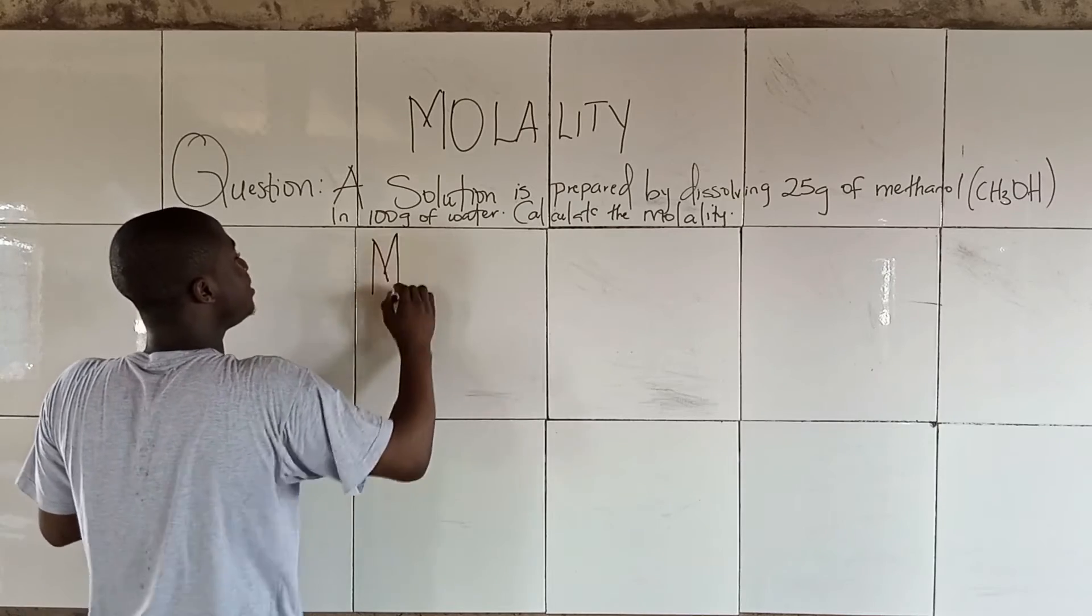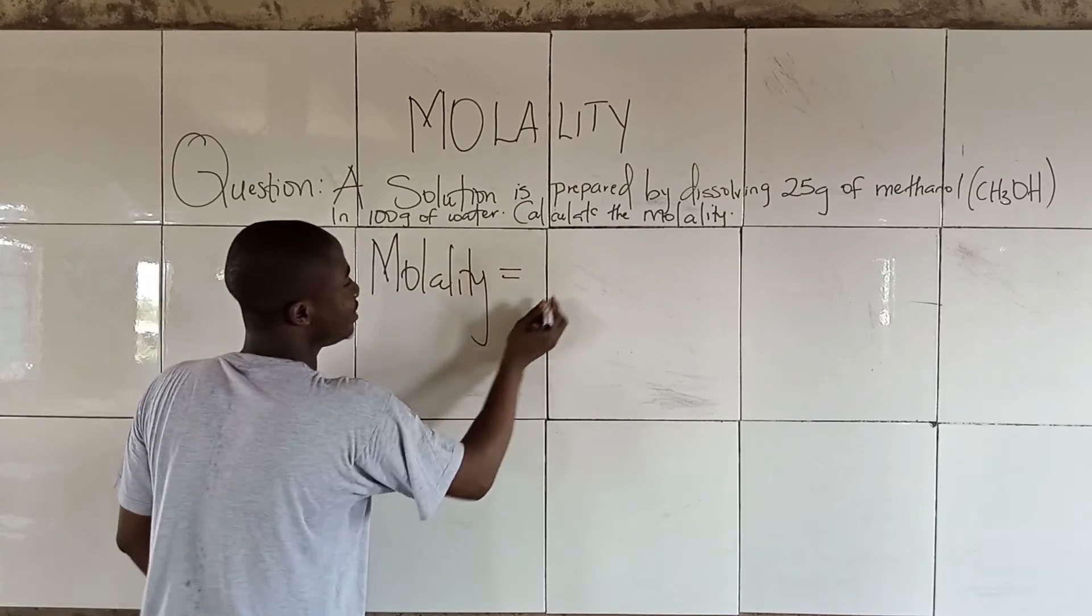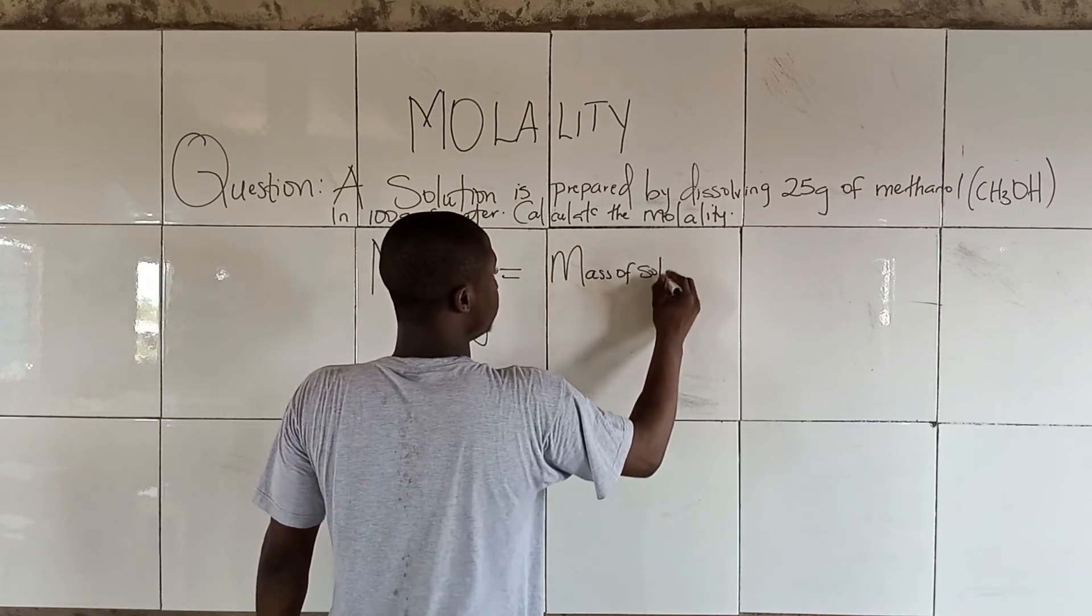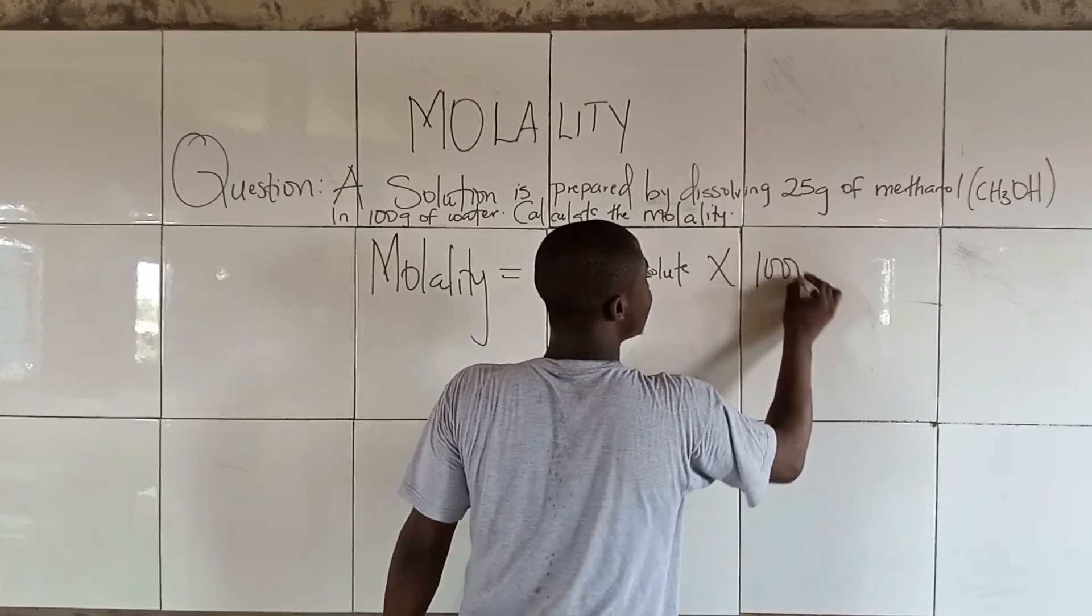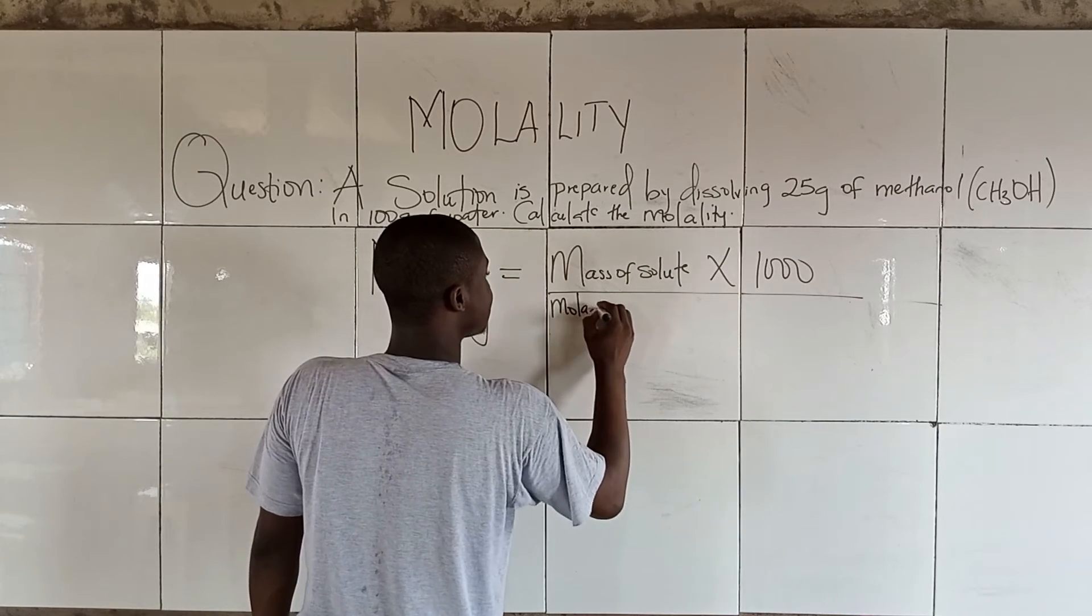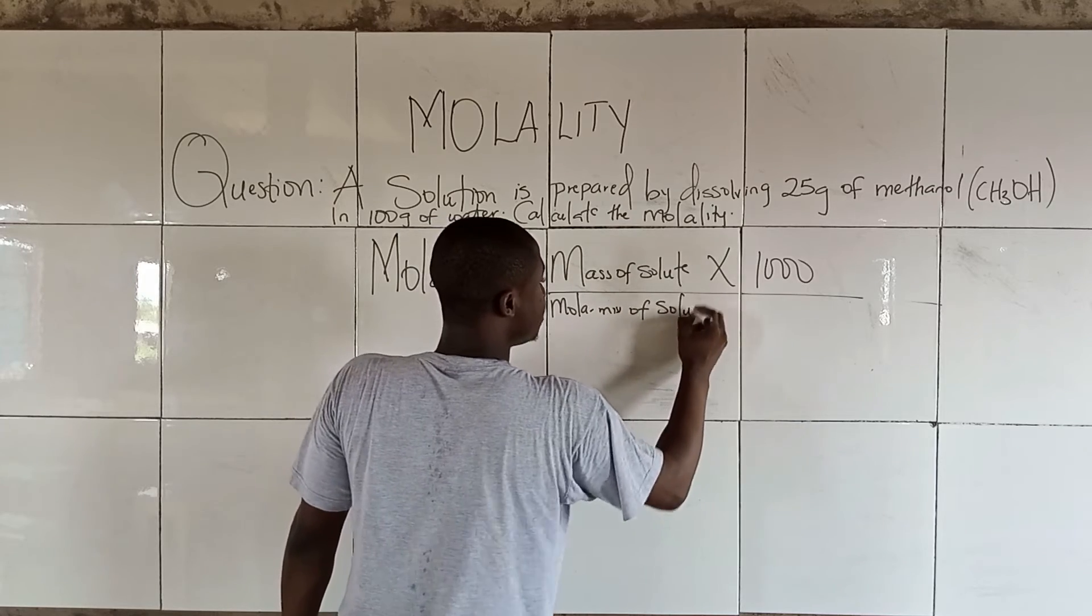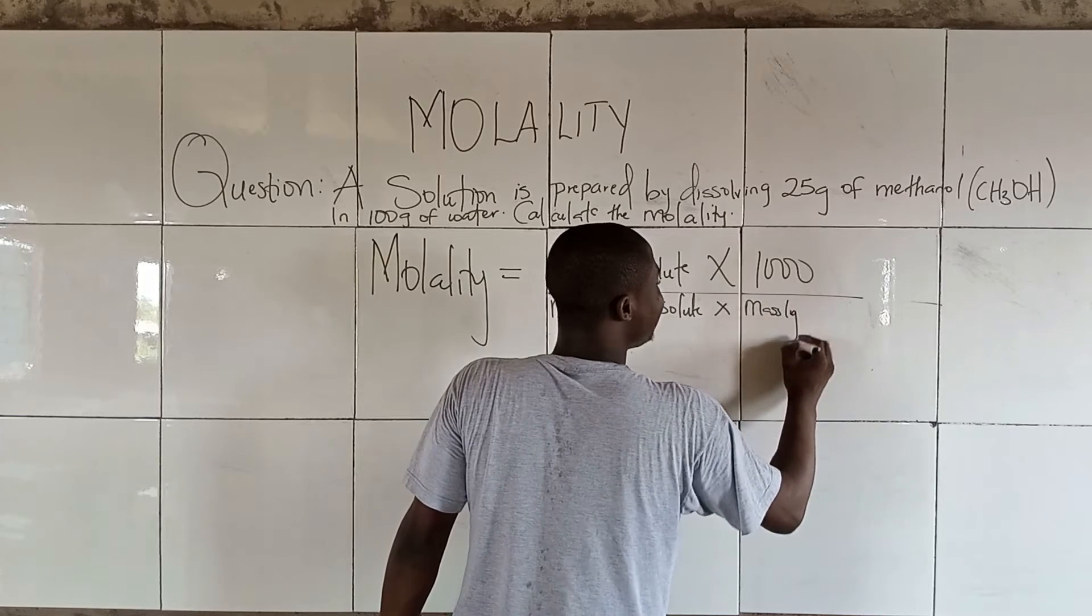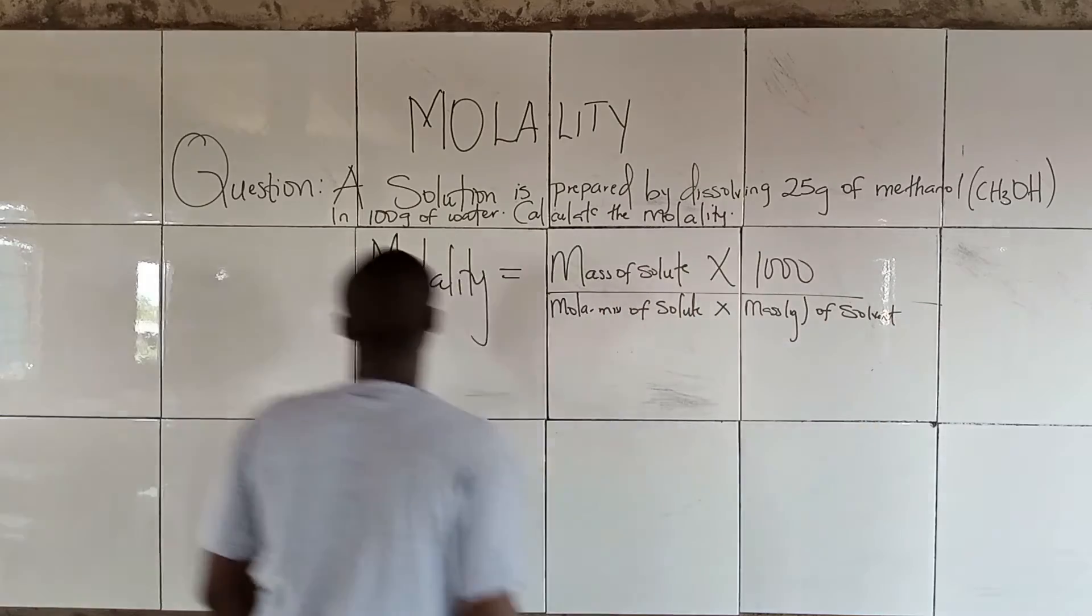Now, molality is simply this. The formula for molality is given to be mass of solute times 1,000 over molar mass of solute times mass in grams of solvent.